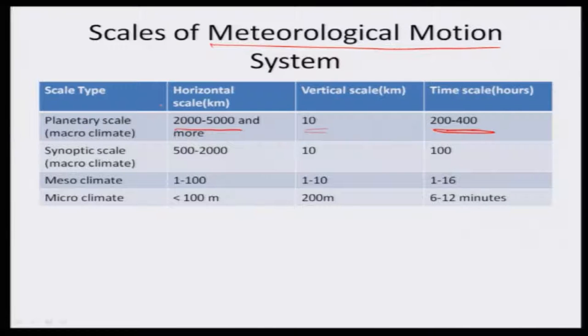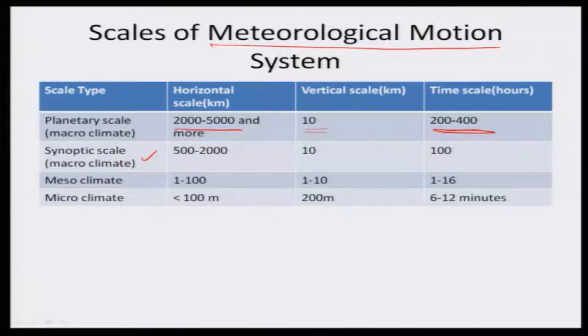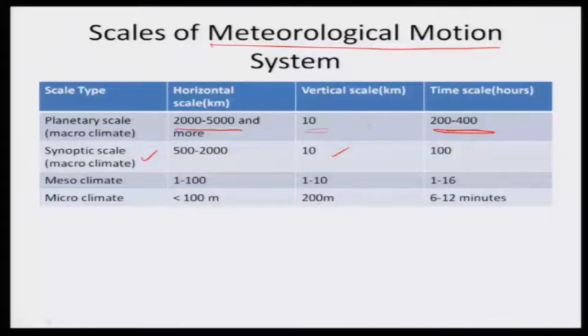Coming to the synoptic scale, the horizontal distance is 500 to 2000 kilometers — maybe one state, or two or three states: southern India, east India, western India. By using this scale only, the Indian south-west monsoon is predicted under long range forecast — east India, west India, south India, and north India rainfall. The vertical scale also covers the complete entire troposphere, and the time scale is 100 hours.